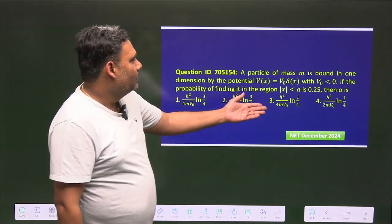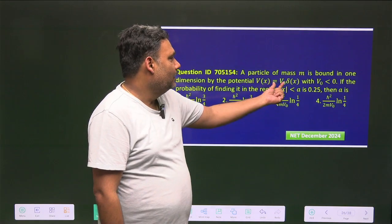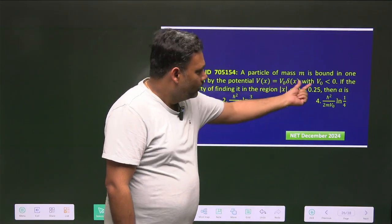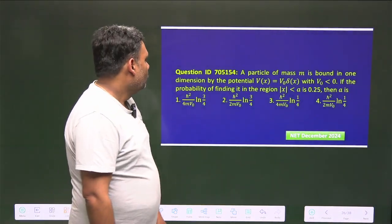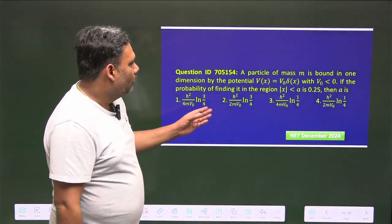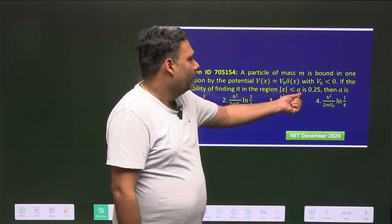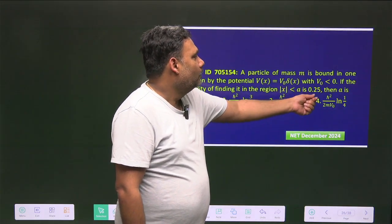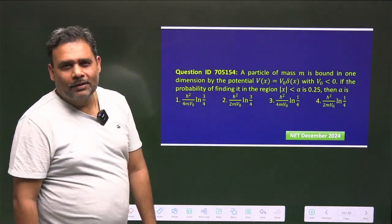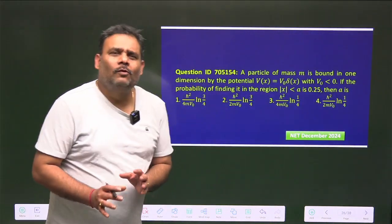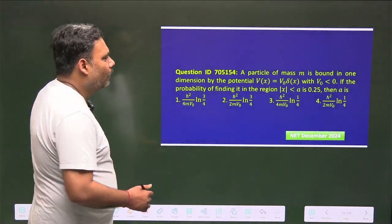The particle is bounded, so obviously V(x) = V₀δ(x), and V₀ must be negative for a bound state to exist. It is given that the probability of finding the particle in the region |x| < a is 0.025. We need to find the value of a. This is a simple question but requires careful calculation.